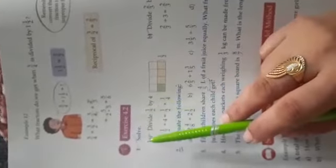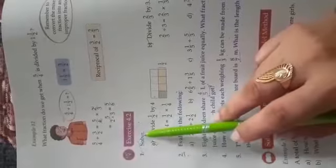Good morning students. Today I will explain Exercise 4.2, first part. First, let's solve divide 1 by 2 by 4. The problem statement is: divide 1 by 2 by 4, which means 1/2 divided by 4.